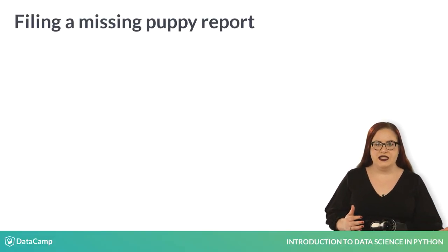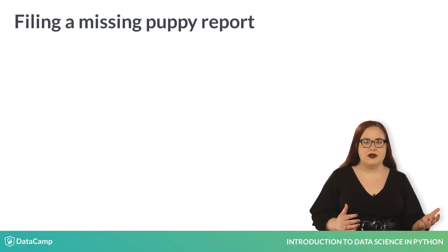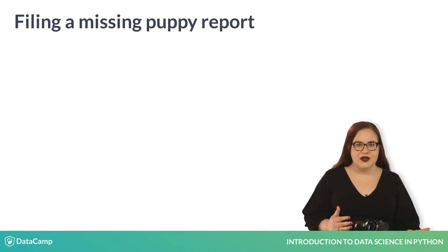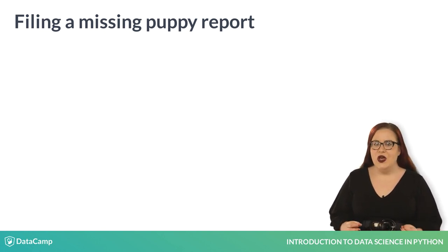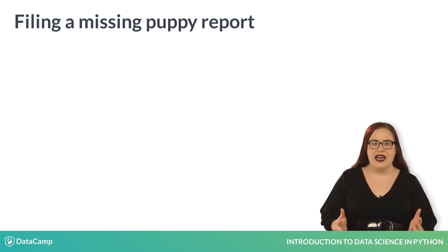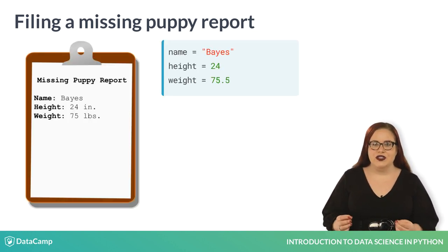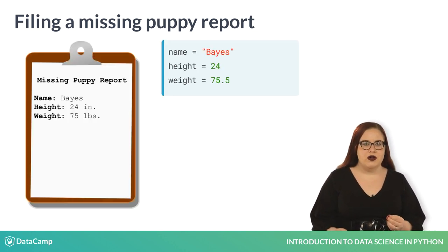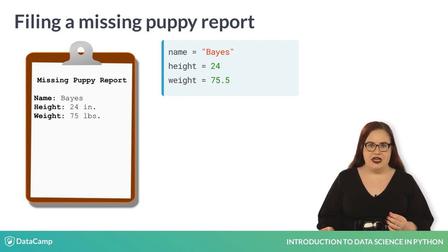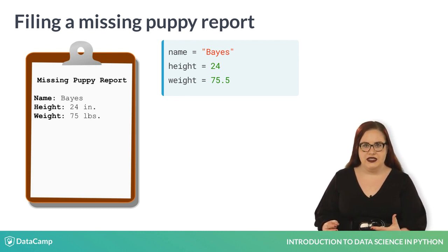In the previous lesson, we told you about our kidnapped golden retriever, Bayes. To solve the mystery, let's start by filling out a missing puppy report. In order to file the report, we'll need to record some information about Bayes, such as his height and weight.